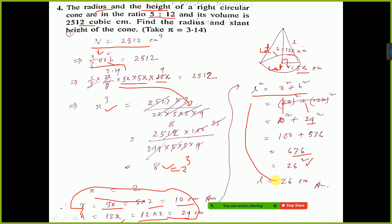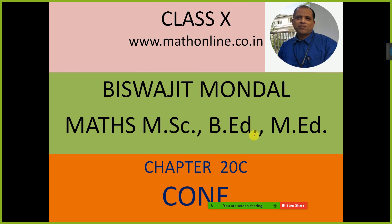So l is equal to 26. In the question, it is told find the radius and slant height. See, we have got radius, we have got one answer, and slant height also another answer we have got. So that's all.